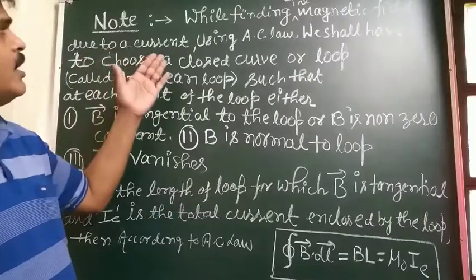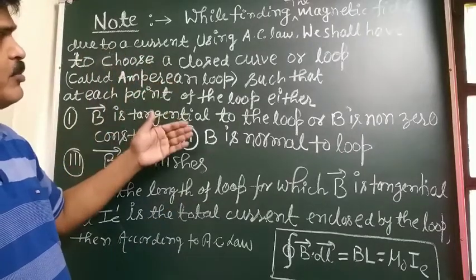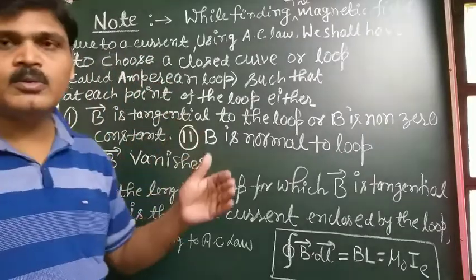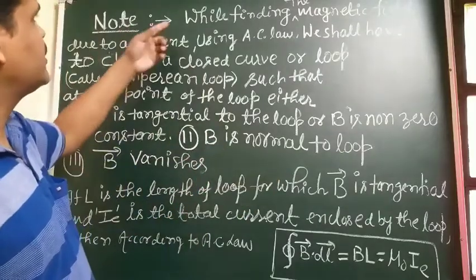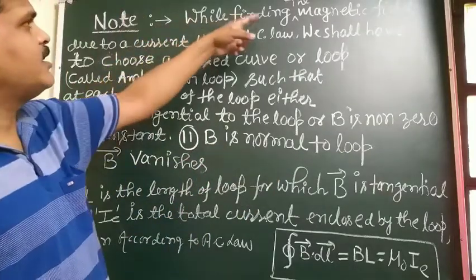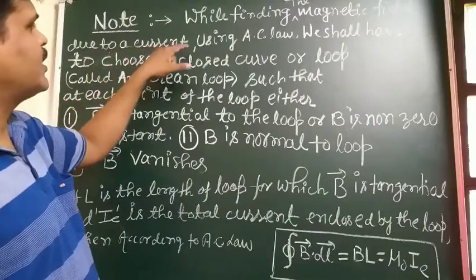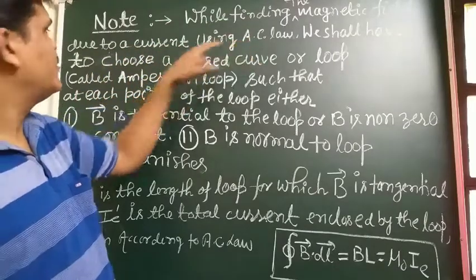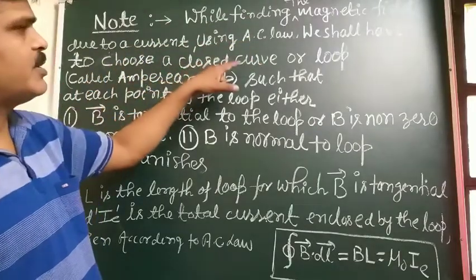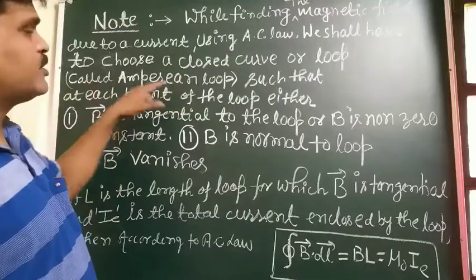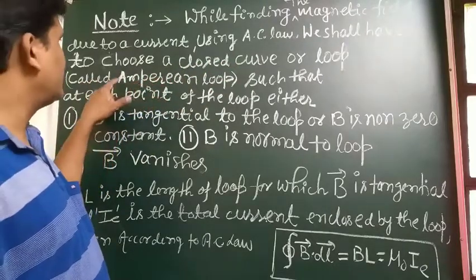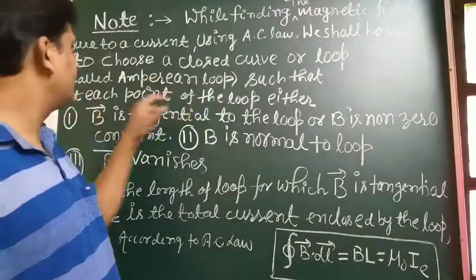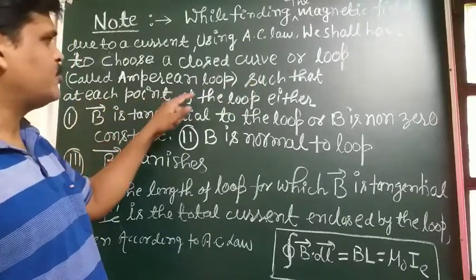Now student, I am writing the main points related to Ampere's circuit law. While finding the magnetic field due to a current using AC law, we shall have to choose a closed curve or loop such that at each point of the loop,